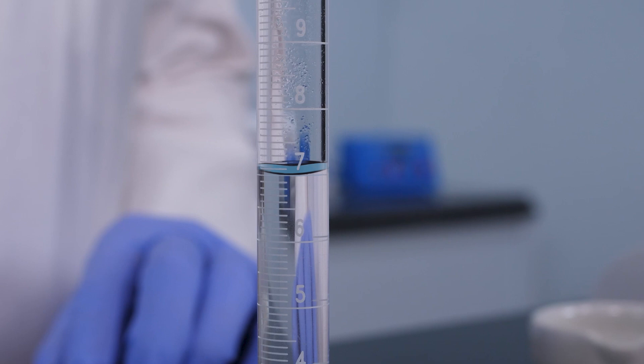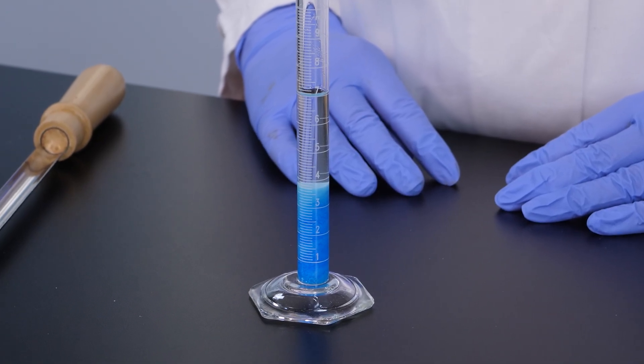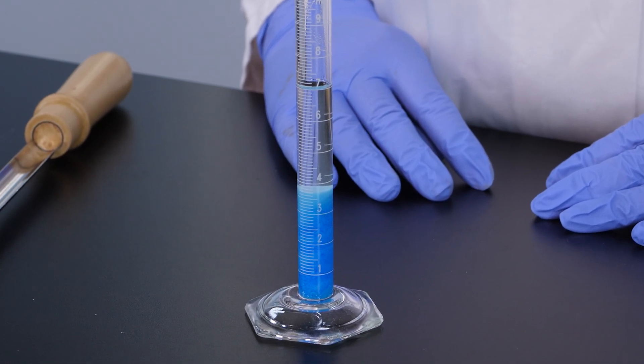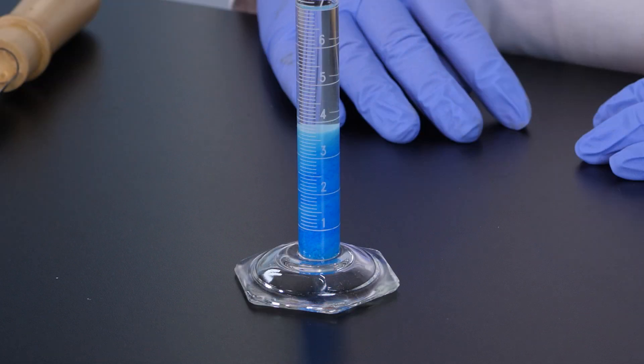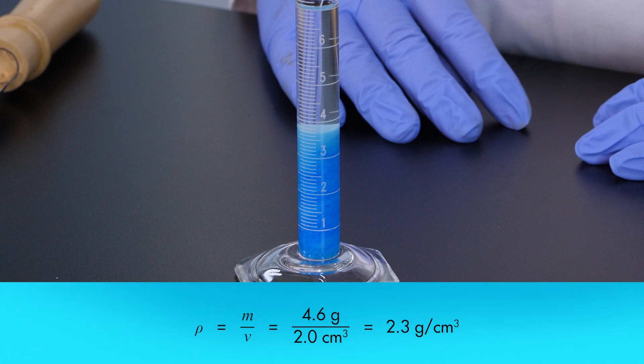We add 4.6 grams of the substance. Notice that the level of the acetone in the graduated cylinder rose to 7.0 milliliters. When we place the substance in the acetone, it takes up space in the liquid, causing the fluid level to rise. The difference between the two volumes is 2.0 milliliters. So we know that the volume displaced by the substance is 2.0 milliliters, or 2.0 cubic centimeters. After finding the volume of the substance by fluid displacement, we calculate the density by dividing the mass by the volume. We discover that the density is 2.3 grams per cubic centimeter.